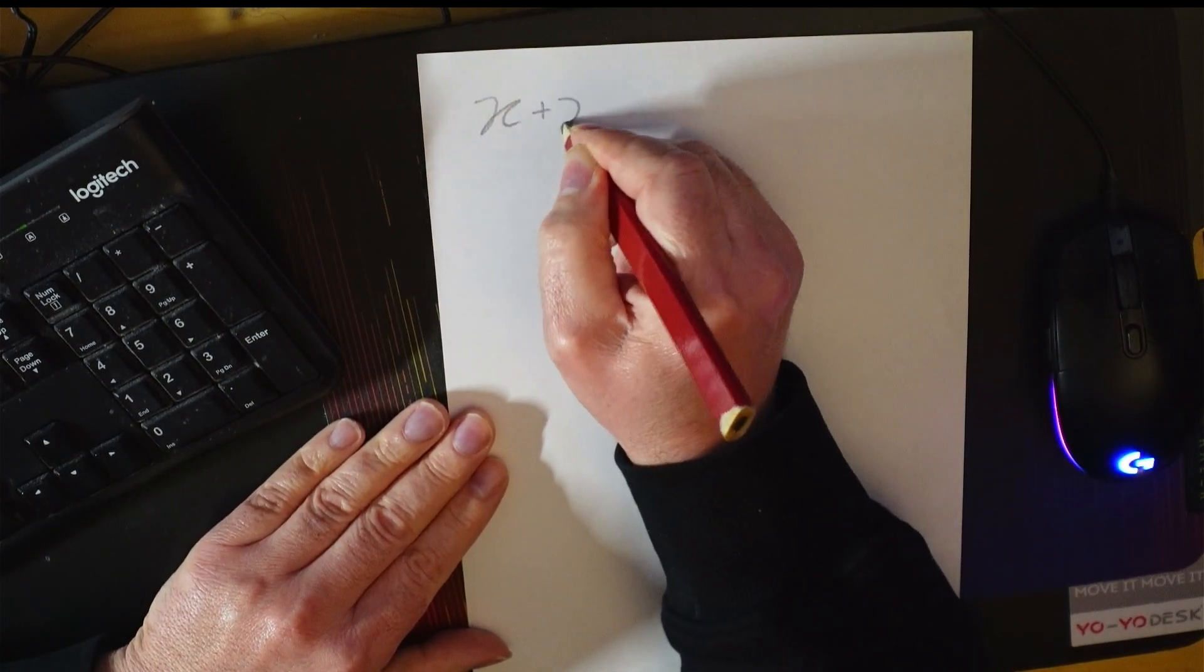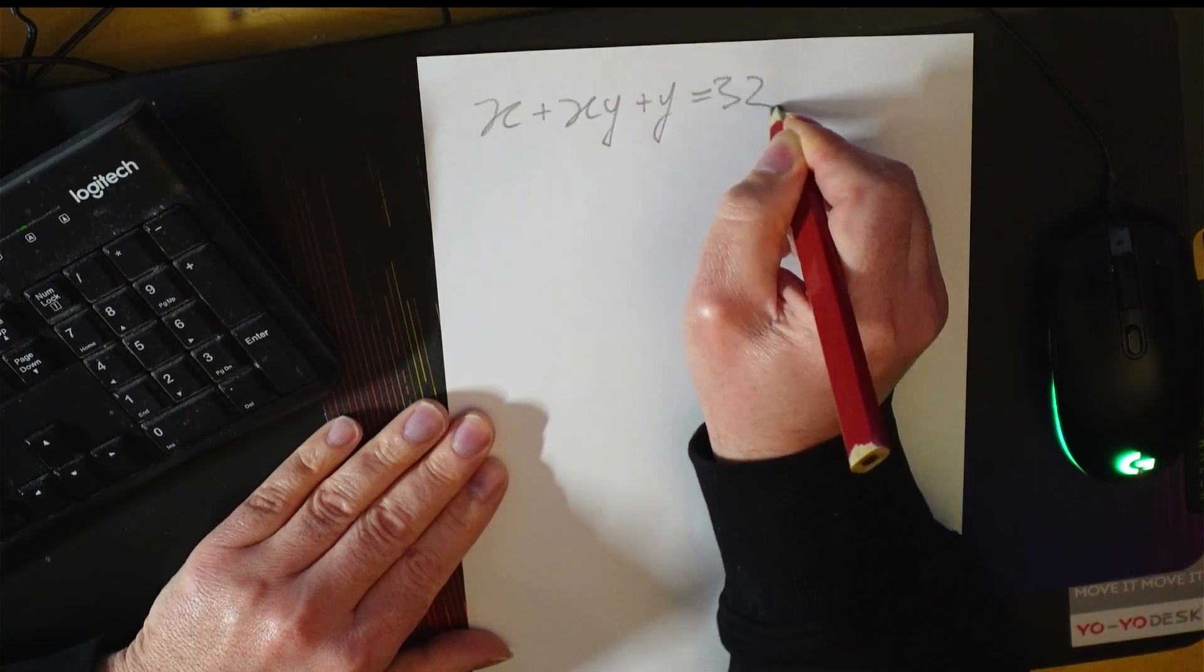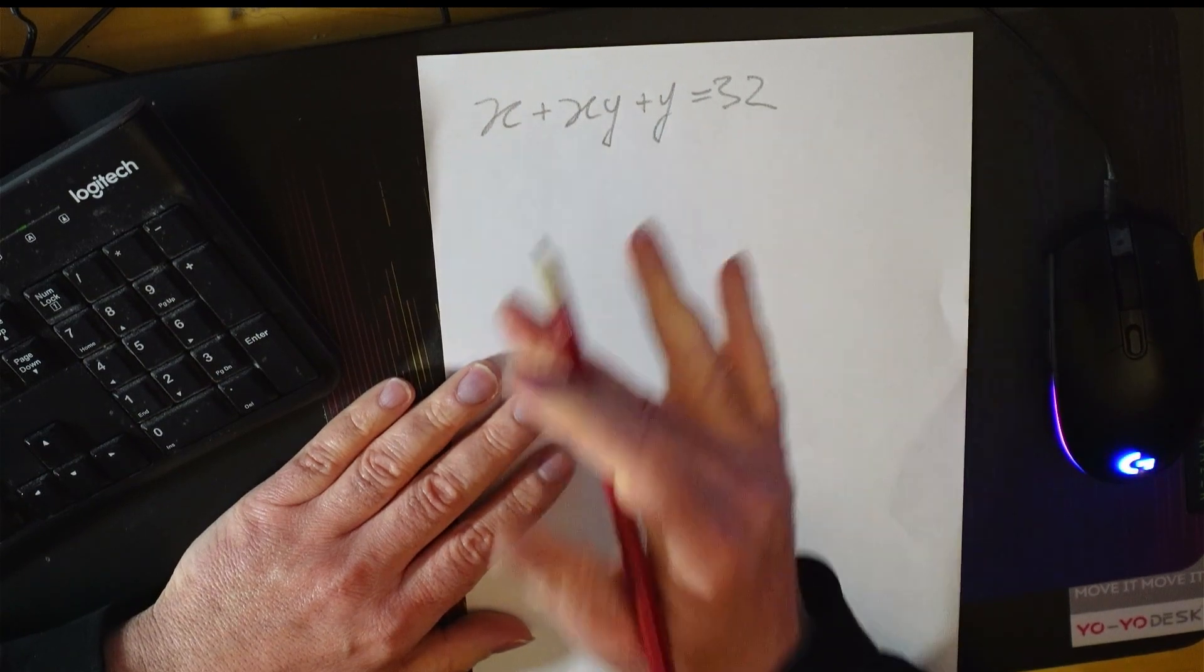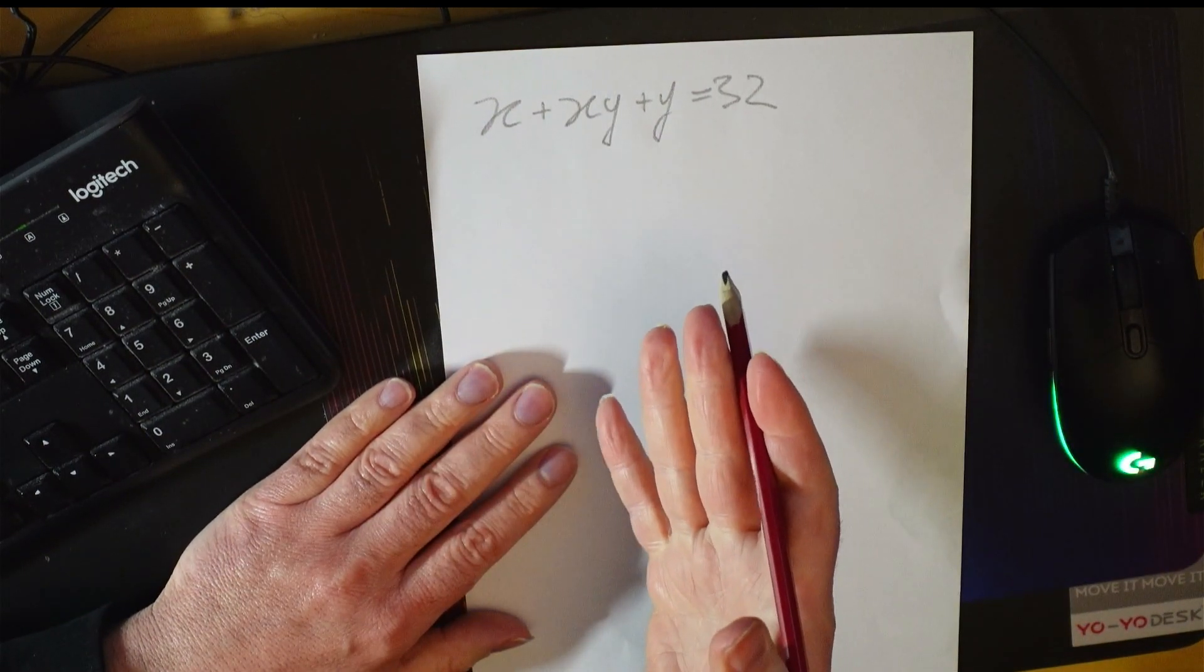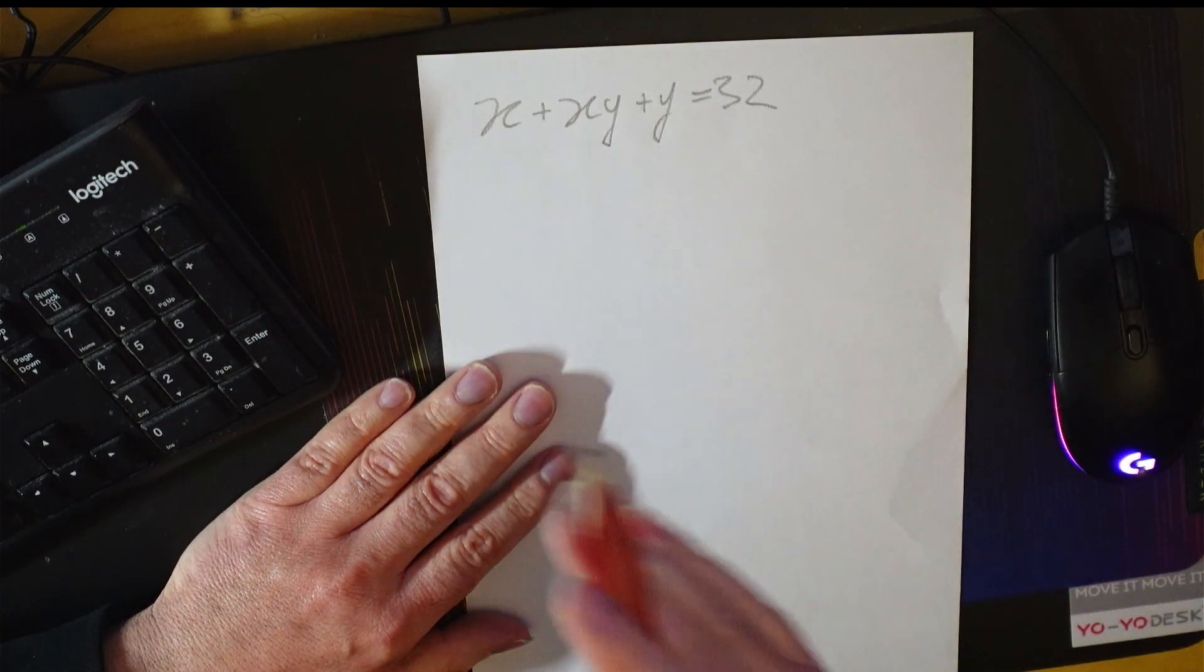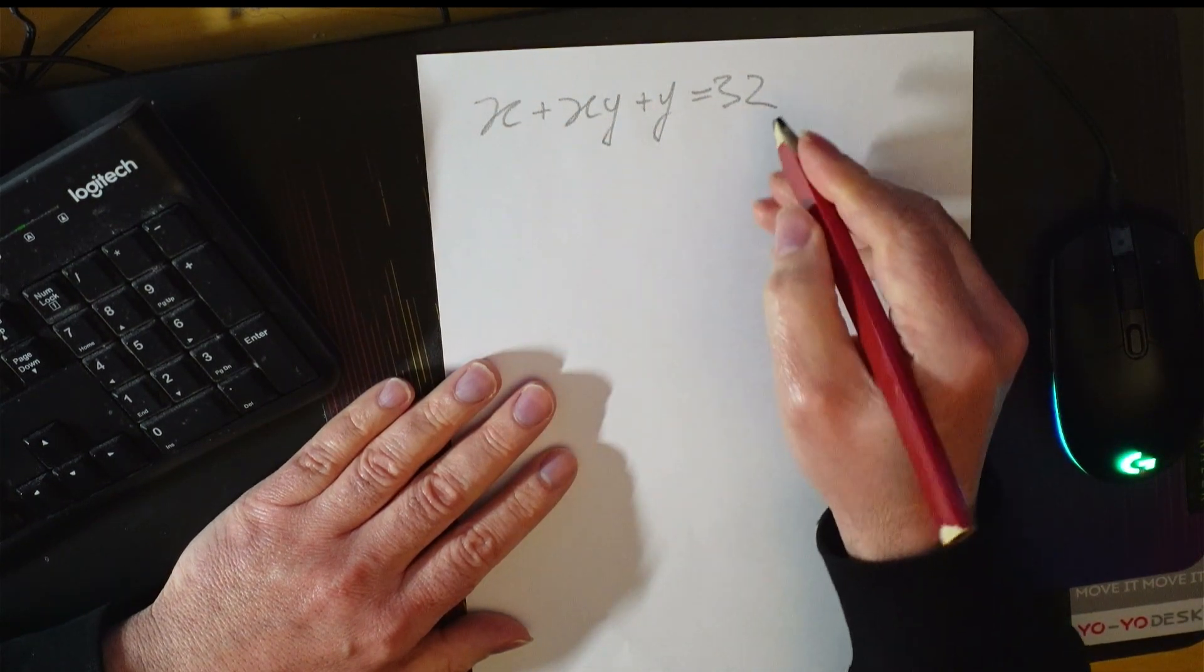So you have x plus xy plus y equals 32 and you need to solve it for x and y. And you go immediately, hang on, you've only got one equation and two unknowns. There's an infinite number of solutions. The bit that wasn't clear is that x and y need to be integers.